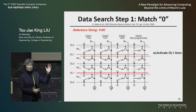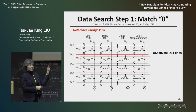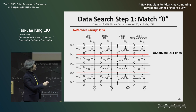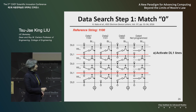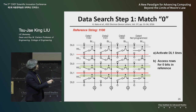The first step is to find out which columns have matching zeros — which columns have zeros in the last two rows. The way we do this is we apply a small voltage to the data line one lines, and then we turn on the rows that are supposed to have zero.